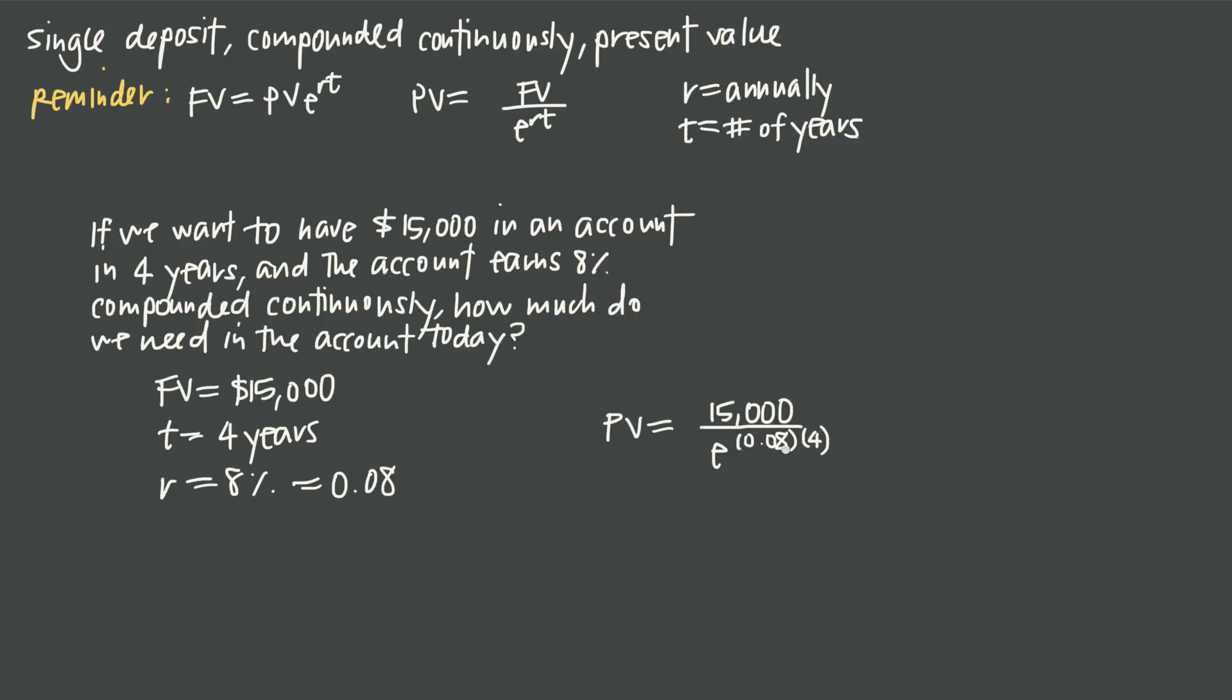We could just plug this whole thing into our calculator or simplify the denominator first and say 15,000 divided by e to the 0.32. The value we're going to get here is about 10,892.20.